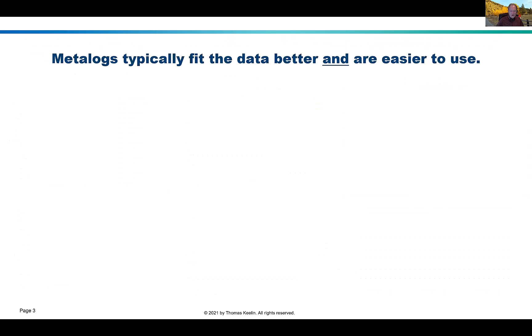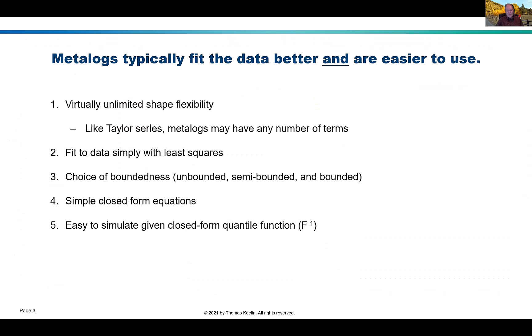So why are metalogs easier to use and more flexible? First, metalogs have virtually unlimited shape flexibility. The equations in the metalog family are like a Taylor series and may have any number of terms — practically from two to 16, but you could have more. The more terms you have, the more shape flexibility there is. Second, one can fit to data simply with least squares, which avoids the nonlinear optimization required to find the parameters of most classical distributions — here the fit is simply an ordinary least squares calculation. Third, there's a choice of boundedness: unbounded, semi-bounded, or bounded metalogs according to whatever are the natural bounds for your application.